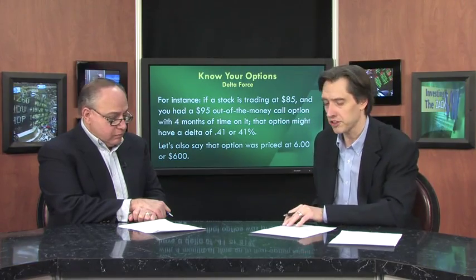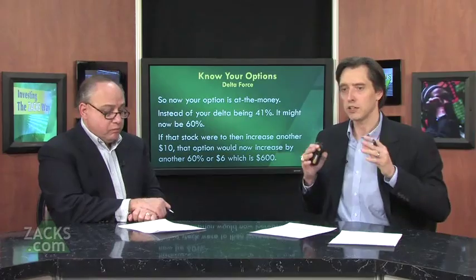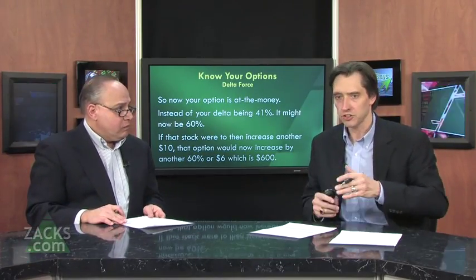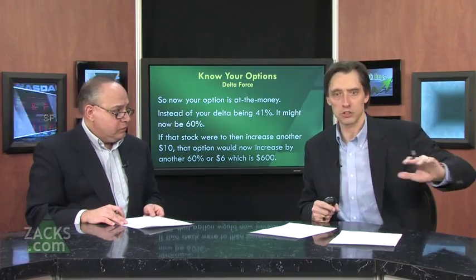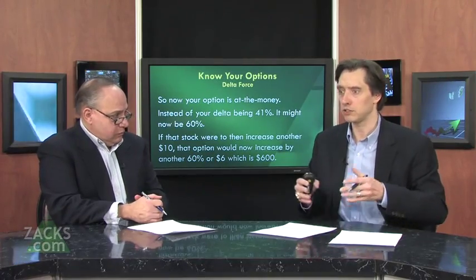It's important to remember that as your option gets further in the money, your Delta will increase up to 100%. Likewise, as your option gets further out of the money, your Delta will decrease. Continuing with this example, your Delta, which was 41%, might now be worth 60%. If that stock were to then increase another $10, that option would now increase by another 60%, or $6, which is equivalent to $600. As your Delta increases, your option will move more.